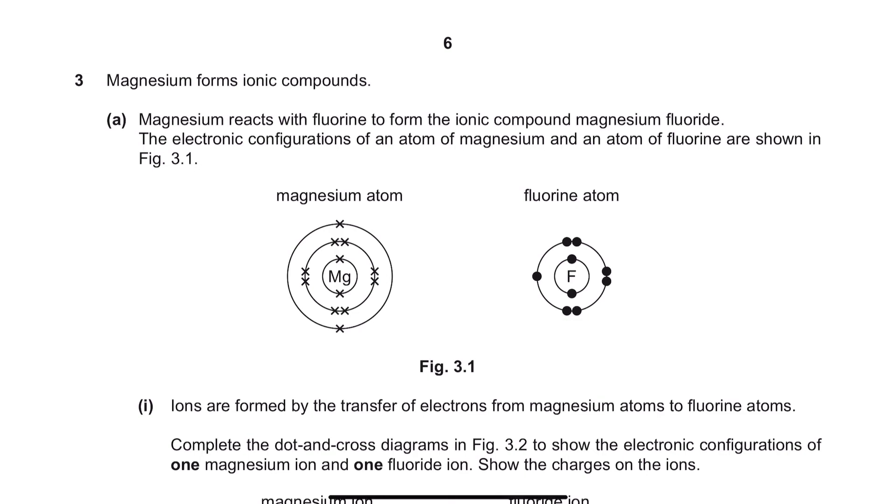Question 3. Magnesium form ionic compounds. Ionic compounds are formed when a metal element reacts with a non-metal element. Question A. Magnesium reacts with fluorine to form the ionic compound magnesium fluoride. The electronic configurations of an atom of magnesium and an atom of fluorine are shown in figure 3.1.